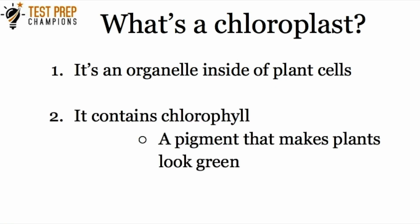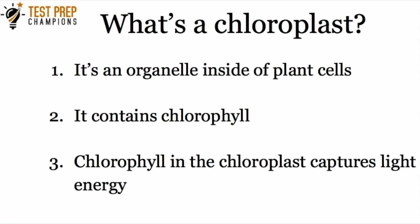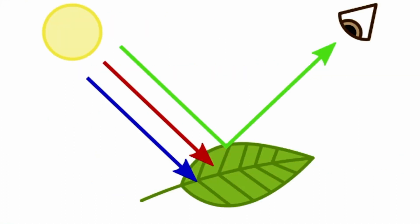The second thing to know about the chloroplast, besides the fact that it's found in a plant cell, is that it contains chlorophyll. Chlorophyll is a pigment that makes plants look green. This chlorophyll in the chloroplast captures light energy.